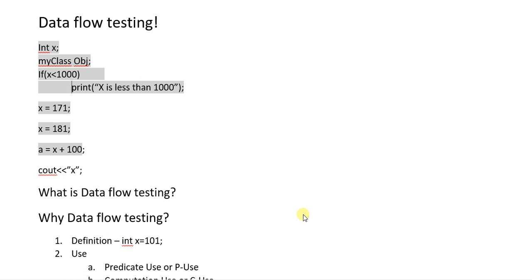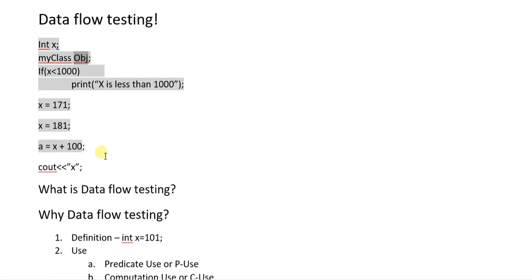Our today's topic is about data flow testing. Data flow testing is all about data that we use in our program. The data is basically the variables that we define, like X is a variable of type integer, or objects like this object is an object of the class MyClass. In data flow testing, we analyze these variables — where we define them, where we use them, and where we kill them.